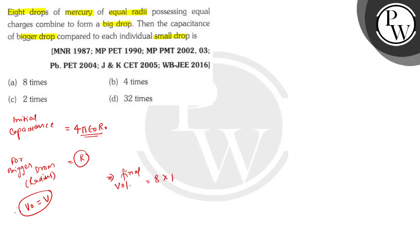So final volume equals to 8 into initial volume of each drop, that is 4π, 4 by 3 πr³, which is equal to 8 into 4 by 3 πr₀³. So we got the relation r³ equals 8r₀³.